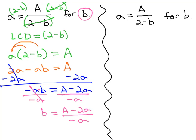Often, people don't like to have a negative in the denominator, and so we'll multiply the numerator by negative 1 and the denominator by negative 1, to give us b is equal to negative capital A plus 2a over lowercase a for our final answer.